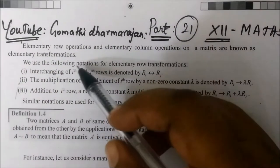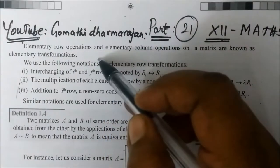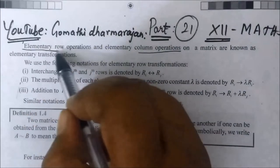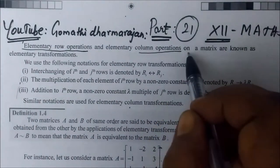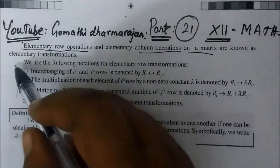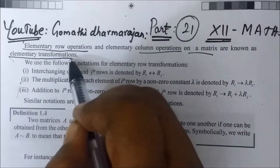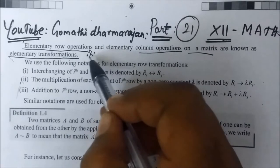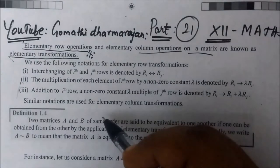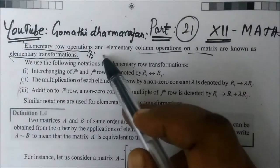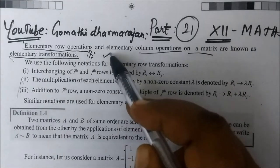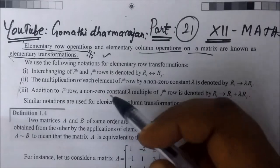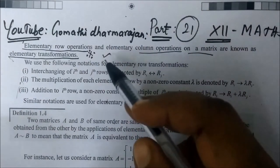We want to see elementary row operations and elementary column operations. Elementary row operations and elementary column operations of a matrix are known as elementary transformation. Our heading is elementary transformation — the rows and columns of our matrix are subject to elementary transformation.